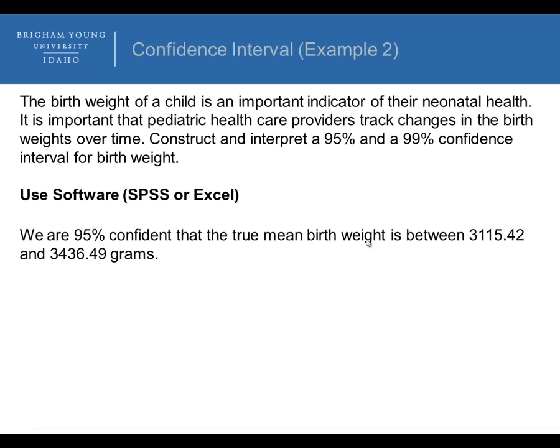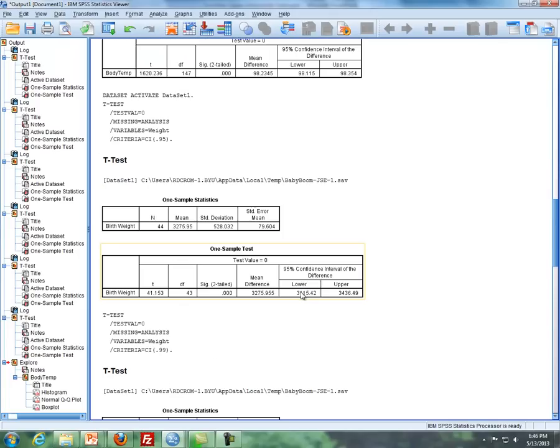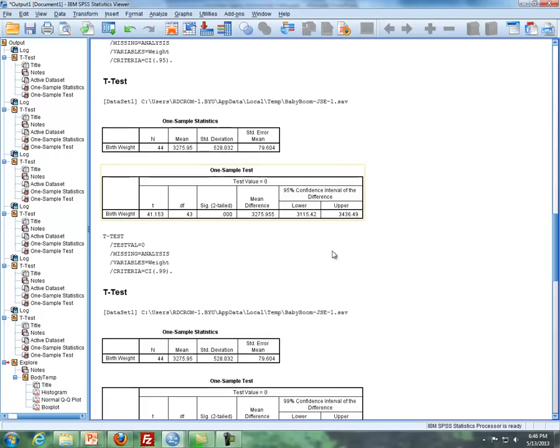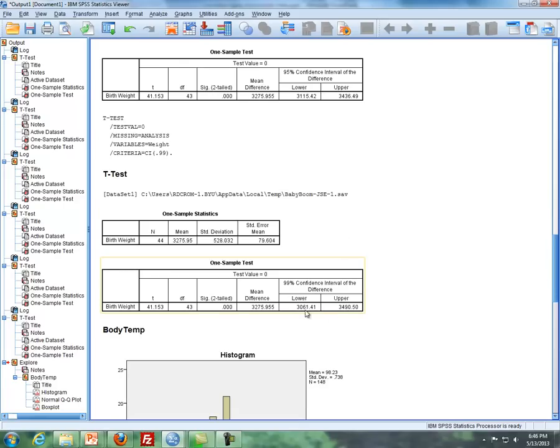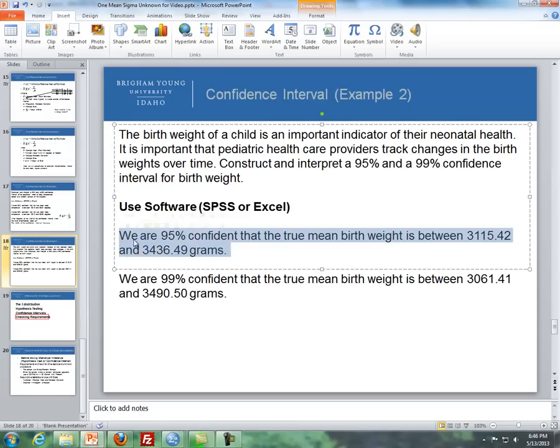So for the 95% confidence interval, we're 95% confident that the true mean birth weight is between 3,115.42 and 3,436.49 grams. Now, you can get that from your output here. Here's an example of output where this is a 95% confidence interval. You see the same thing in Excel like you do here in SPSS. And for the 99% confidence interval, these are the two numbers, the lower bound and the upper bound. How we interpret that, we say for the 95% confidence interval, we're 95% confident that the mean birth weight is between 3,115.42 and 3,436.49.